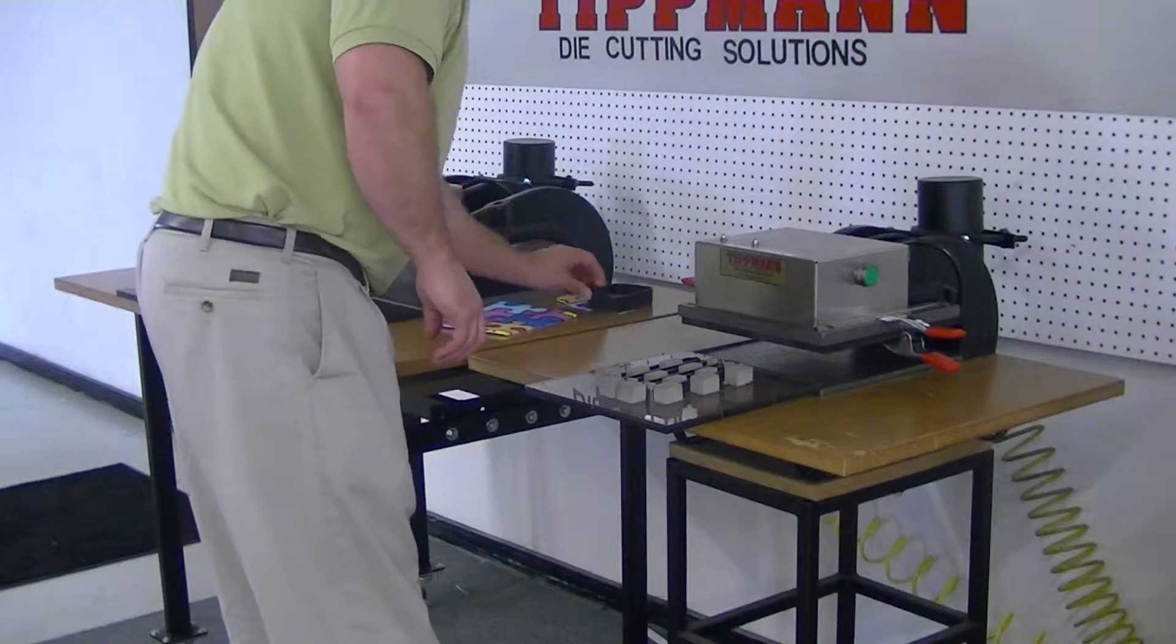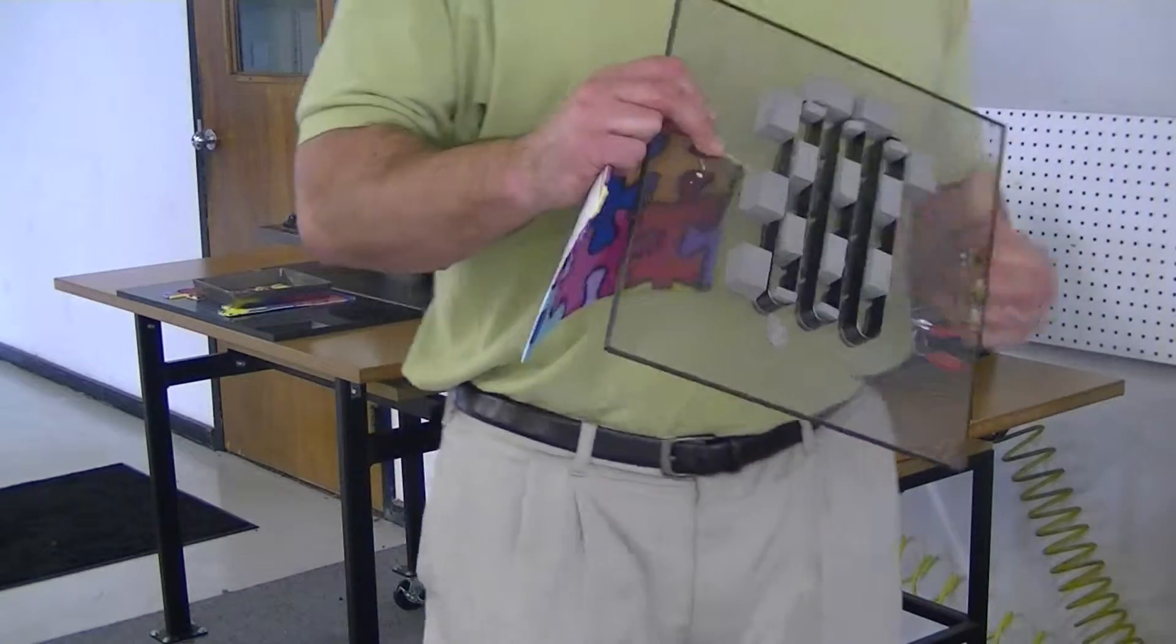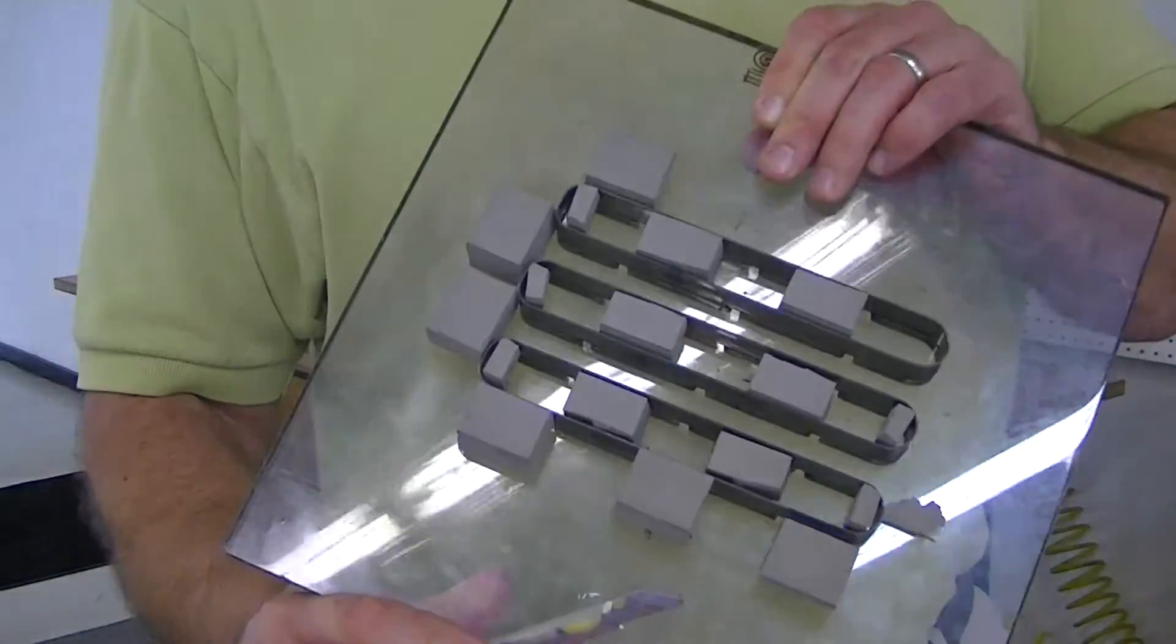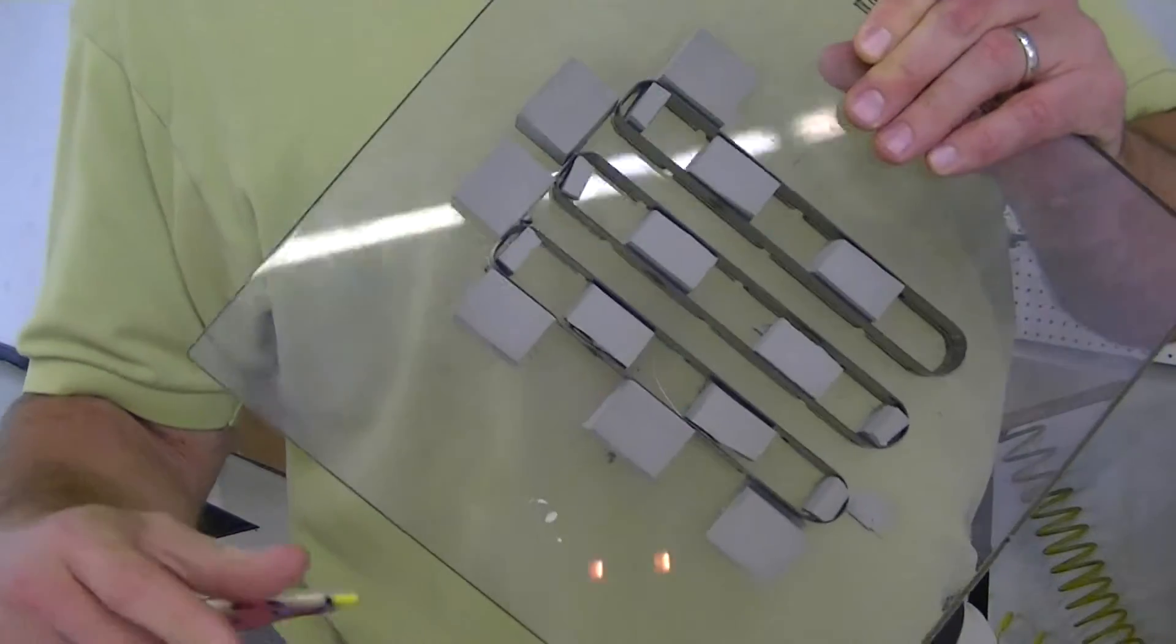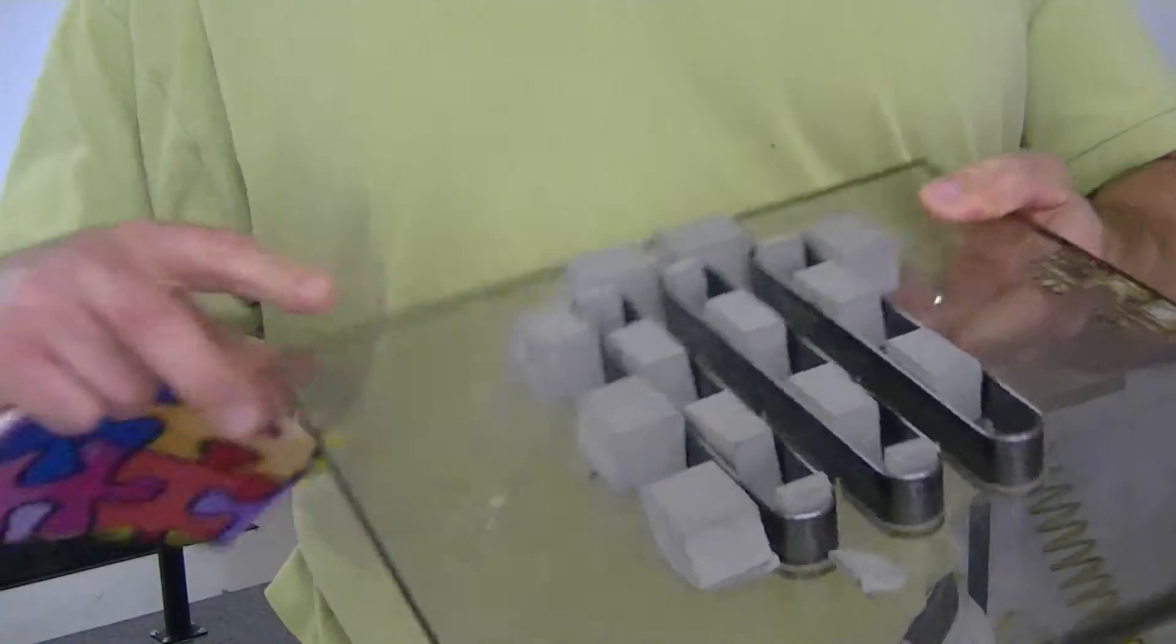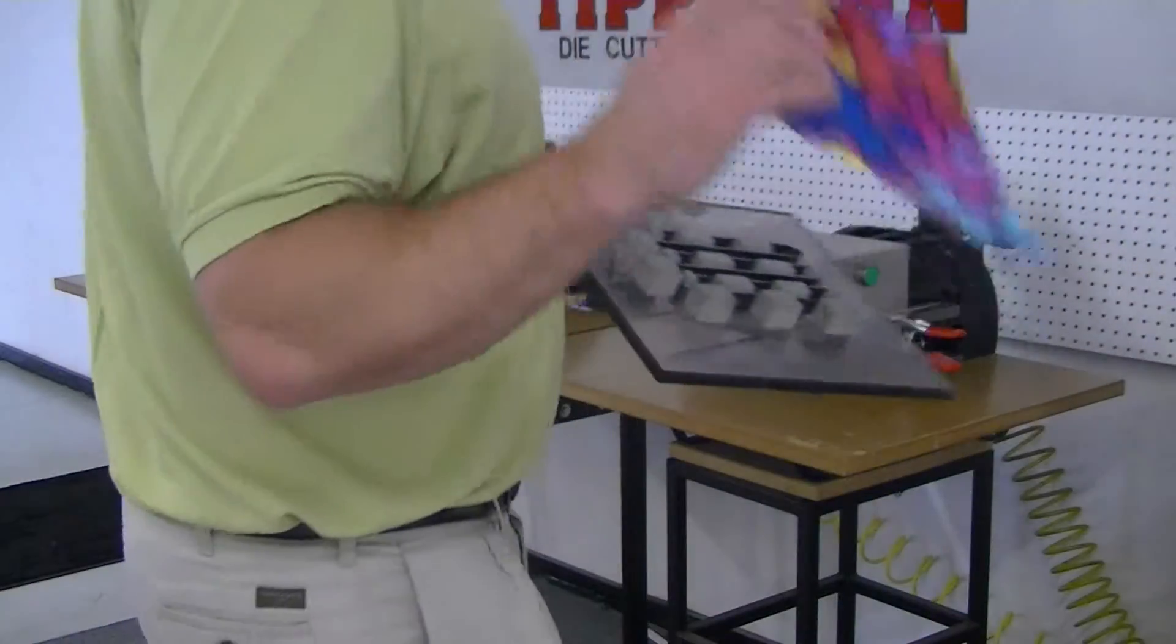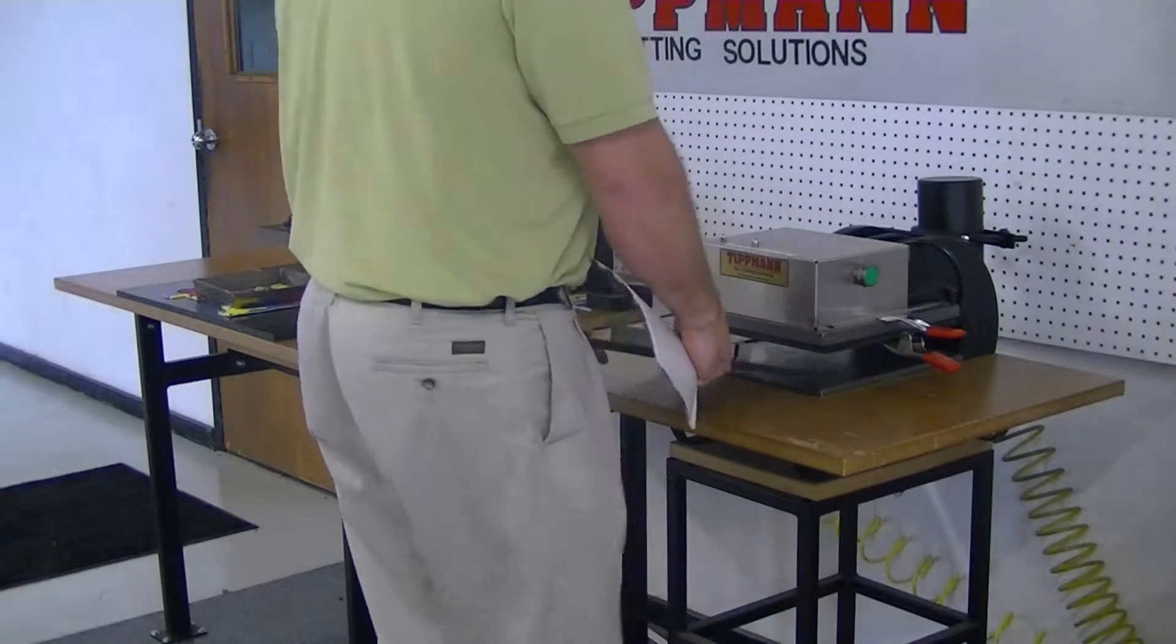And then the third type of die that you actually get the cleanest cut with is a steel rule die. This is a .937 high die mounted in wood or acrylic. In this case, it's actually an acrylic. Now this shape obviously doesn't represent your shape, but I'll go ahead and label all these for you when I send them back.